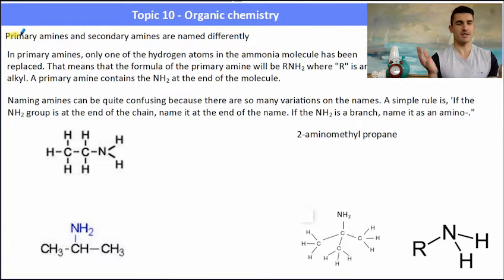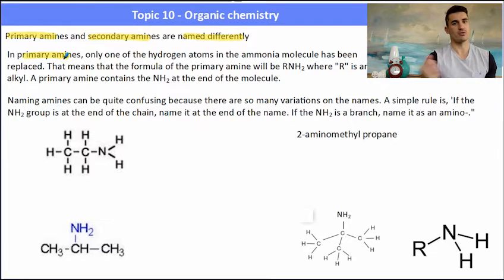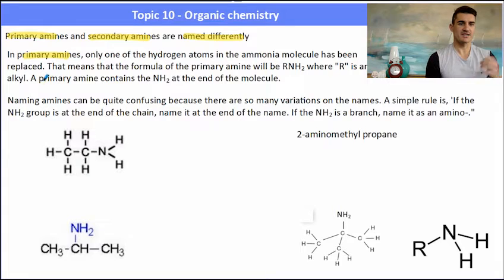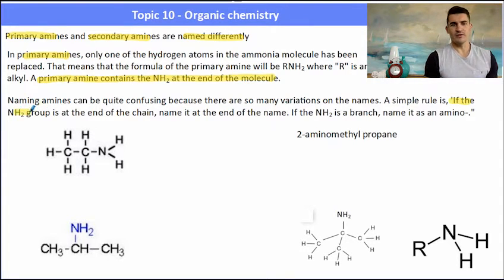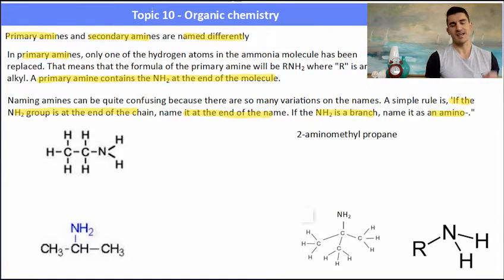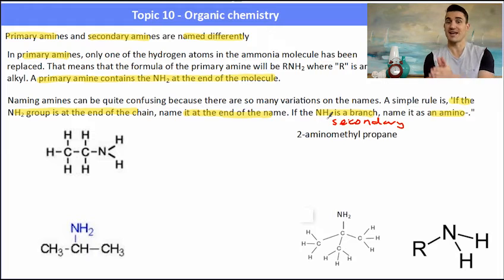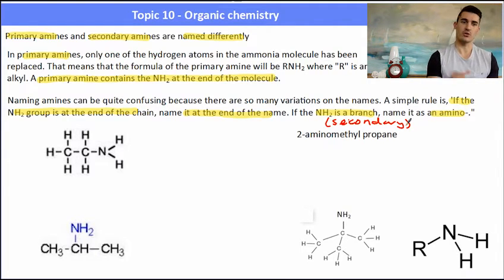So amines — amines are the one that people can never agree on. You need to name them a certain way if they're a primary amine or a certain way if they're a secondary amine. In primary amines only one of the hydrogen atoms has been replaced, meaning the amine group will be at the end of the chain. A simple rule: if the NH2 is at the start or end of the chain, name it at the end as 'something-amine'. If the NH2 is a branch in the middle of the chain — a secondary amine — name it as 'amino-something'.